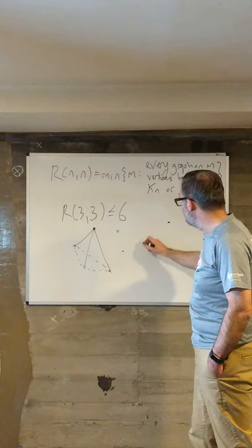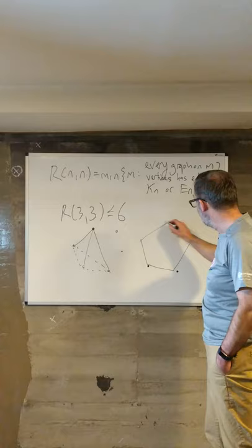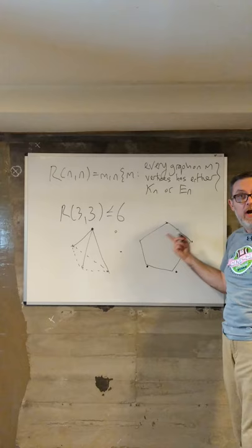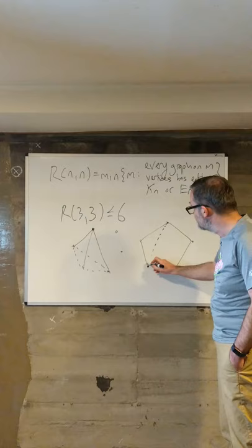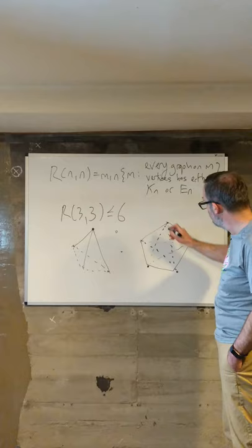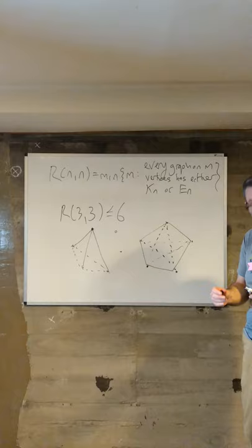And to see that r(3,3) is actually equal to six, we would take this graph here on five vertices. It clearly does not have a triangle. And it also does not have an independent set of size three, because an independent set of size three would be a triangle in the complement, which is also C5, and so clearly doesn't have a triangle.